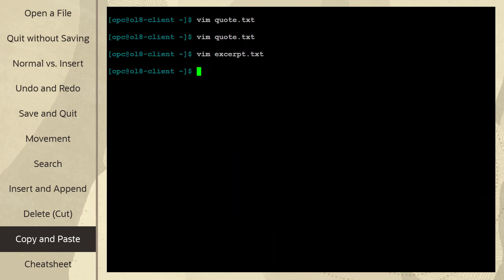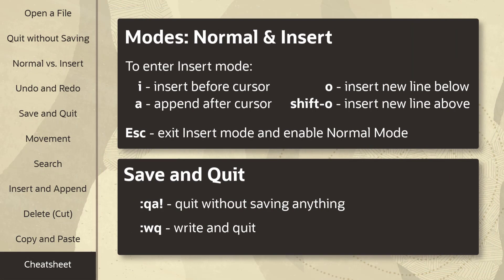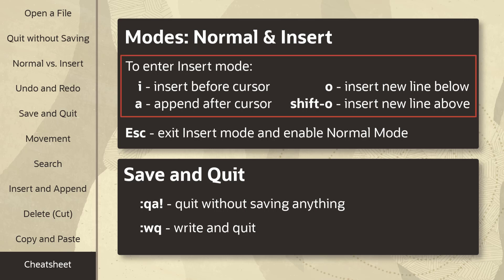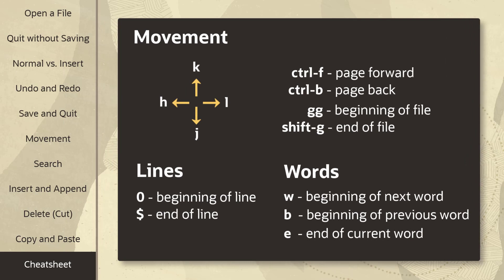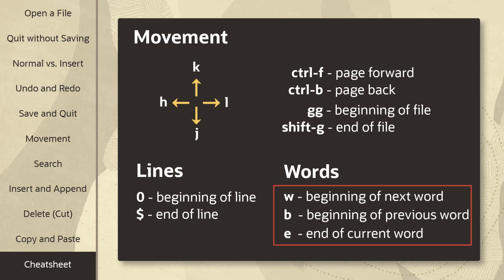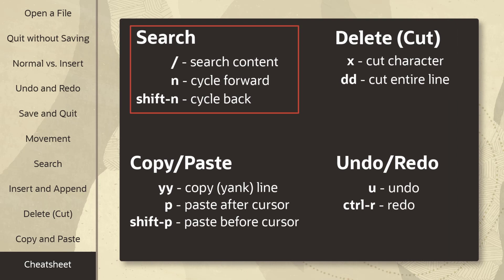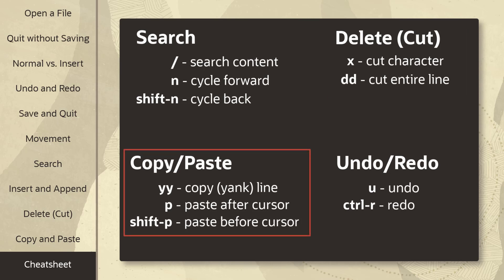That pretty much covers some of the basics when using Vim. Here's a summary of what we learned: there are two modes, normal and insert. There are multiple ways to get into insert mode, and you use escape to exit insert mode. To save and quit, you can use colon QA! to quit without saving, and colon WQ to write and quit. We learned how to move around a file efficiently with the HJKL keys, paging forward or back, and jumping to the beginning or end of a file, as well as the beginning and end of a line and between words. We learned how to search for content and cycle through the results. And finally, we learned how to modify text with delete or cut, copy and paste, as well as undo and redo. This really only scratches the surface of what you can do with Vim, but I hope it gives you a good jump start. Thanks for watching!